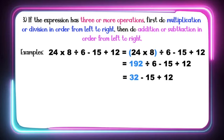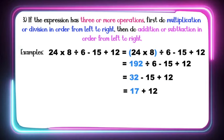After division and multiplication, what do we do next — addition or subtraction? Remember the rule: from left to right. We are going to subtract first, because from the left we have subtraction before addition. 32 minus 15 is equal to 17. Then we add 17 and 12. 17 plus 12 is equal to 29. So 24 times 8 divided by 6 minus 15 plus 12 is equal to 29.